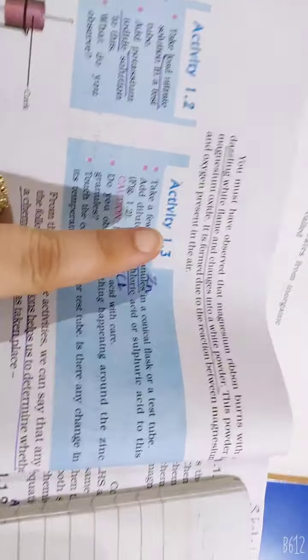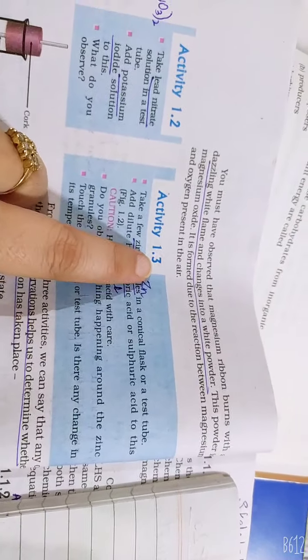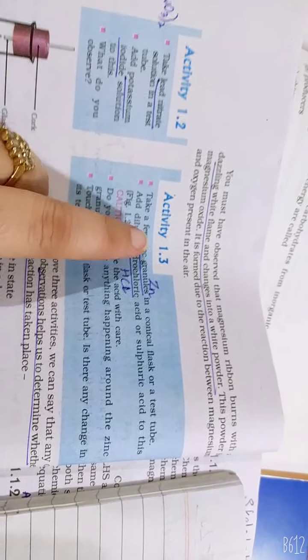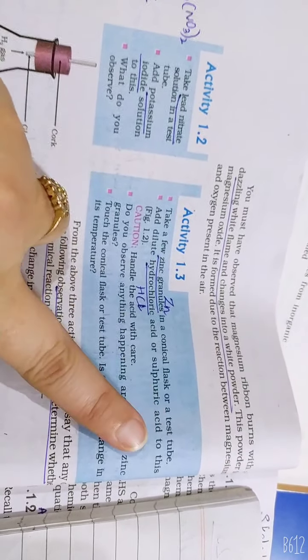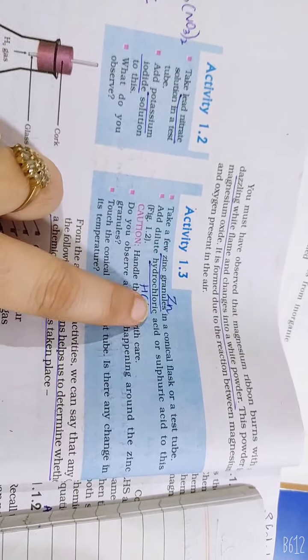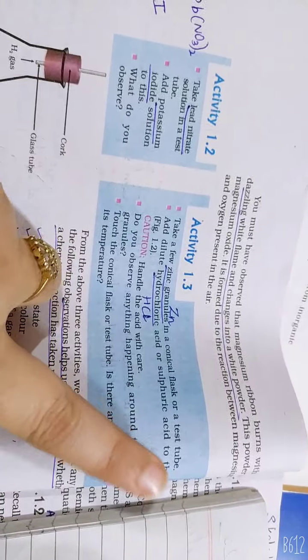Hello class 10. Today we are going to start Activity 1.3. Take a few zinc granules in a conical flask or a test tube. Add dilute hydrochloric acid or sulfuric acid to it.